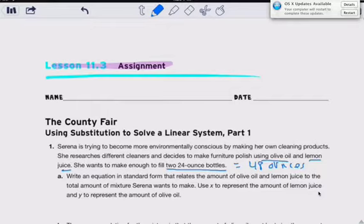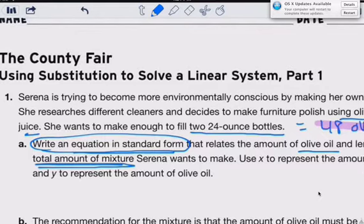Write an equation in standard form that relates the amount of olive oil and lemon juice to the total amount of mixture. So they want you to write an equation in standard form. Total amount of mixture we know is 48 ounces.